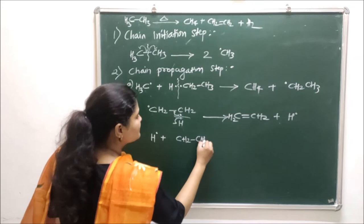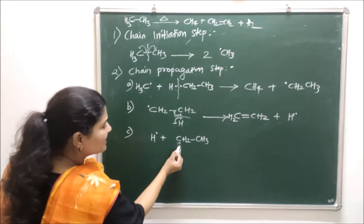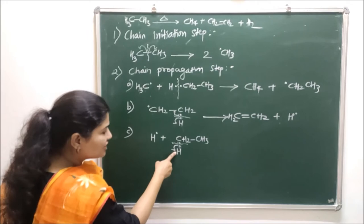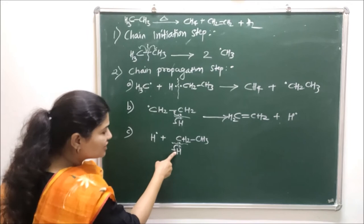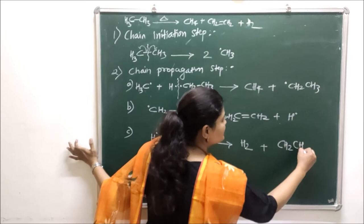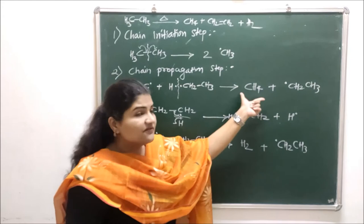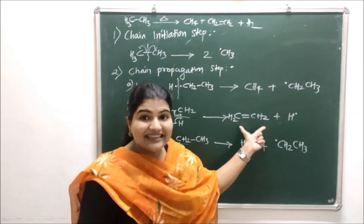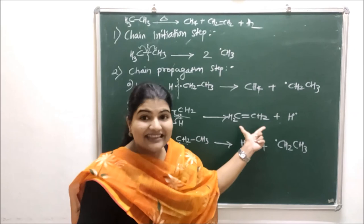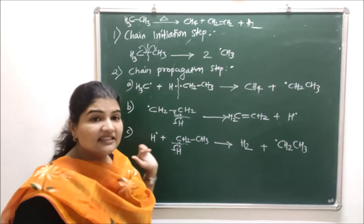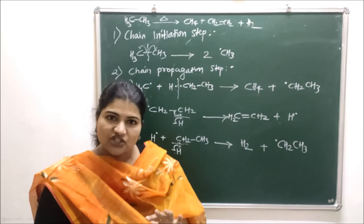The hydrogen free radical then attacks the ethane substrate again. The C–H bond in ethane is broken: one electron stays with the carbon (giving an ethyl free radical, ·CH₂CH₃) and the H· combines with the attacking H· to form a hydrogen gas molecule (H₂). Steps B and C go on repeating over and over again until the chain termination step.